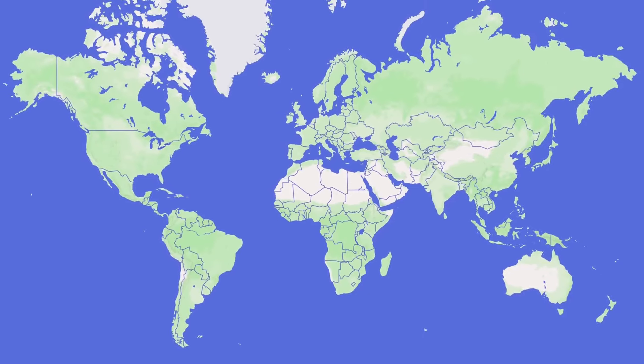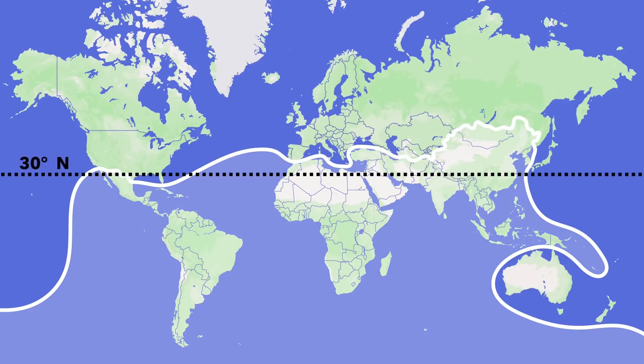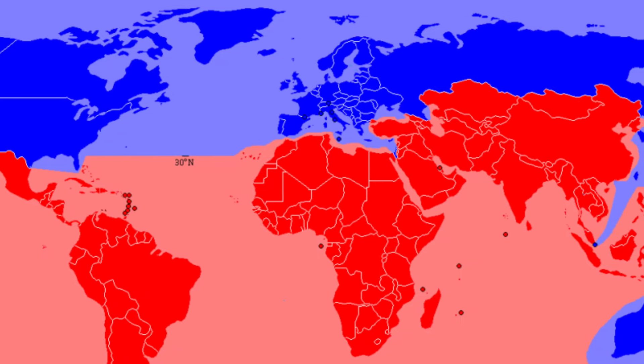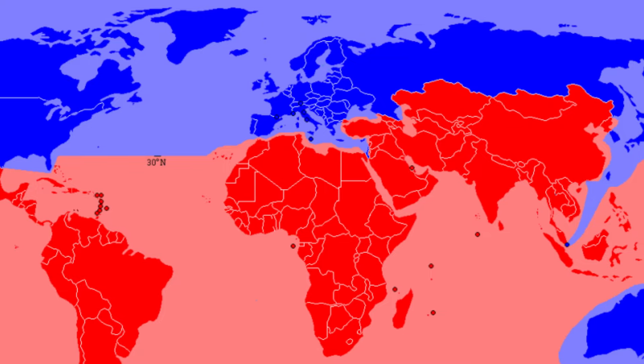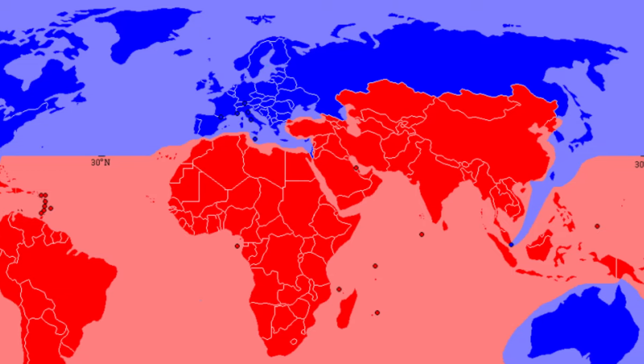The term 'Global South' was introduced to designate countries mostly located in the Southern Hemisphere — countries with low and middle incomes that have historically been on the periphery of the global economy and politics. The term gained popularity after the Brandt Report in 1980, which proposed a new approach to global development and divided the world into the North and South. Its first usage dates back to the late 1960s when political activist Carl Oglesby wrote about the Vietnam War. The Global South is often seen as the counterpart to the economically developed, industrialized countries of the Global North, which have high per capita incomes, advanced infrastructure, and stable political systems.